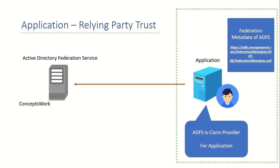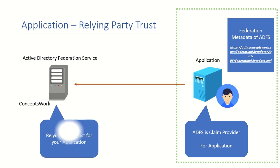Once the application has routed the request to your ADFS server and ADFS has received the request, ADFS will perform certain tasks depending upon the application requirement — such as sending certain claims to the application. All this configuration related to the application is saved in the form of a relying party trust. When ADFS receives a request for a specific application, it needs to know whether the request it has received is a legitimate request. That is the reason why for every application contacting your ADFS there must be a relying party trust.